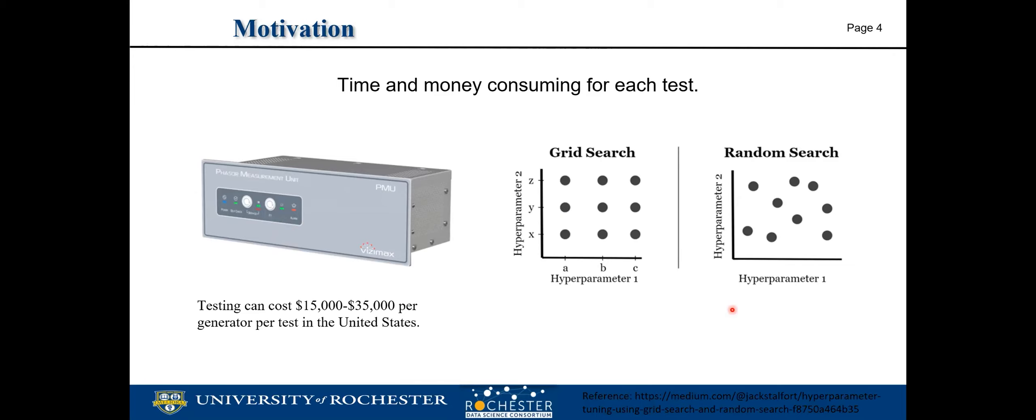Here are two conventional automated black box optimization algorithms: grid search and random search. In grid search, we evaluate the model performance on all parameter combinations defined by the grid and select the parameter combination that yields the best performance. Random search can potentially explore the parameter space more extensively. However, both of these methods only reduce human effort and don't utilize prior experiment information, so the search is blind.